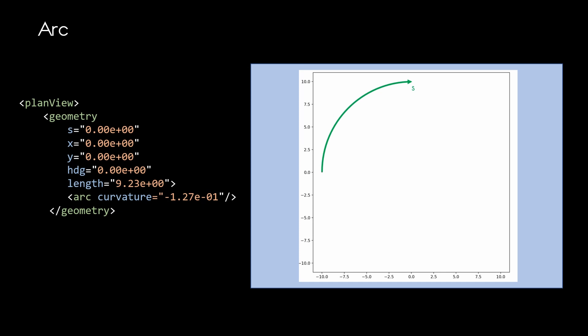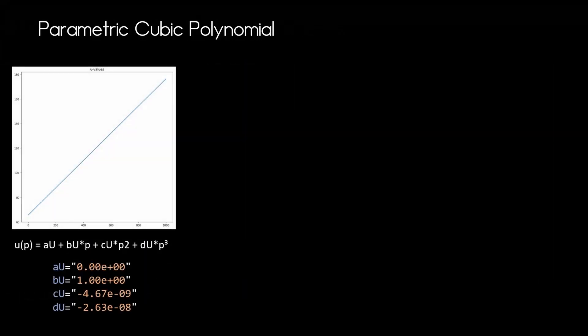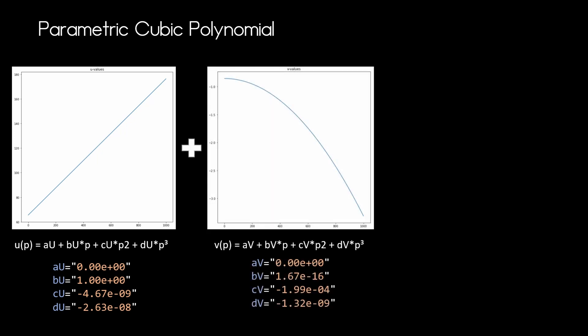These three elements are the ones you would most likely use when designing roads by hand. The parametric cubic polynomial is used in many cases to fit the reference line to measurement data. This piece of reference line is defined in a local coordinate system and the values for the u and v axes are calculated by two individual equations. First you calculate the values for the u axis using a third-order polynomial — the result is nearly a straight line, as expected from the parameters. Next you calculate the values for the v axis. On the horizontal axis you see the p values used to step through the equations, and here I took a thousand sample points for the reference line element.